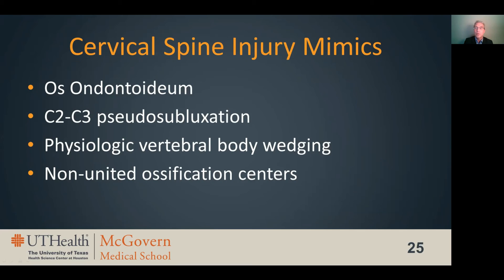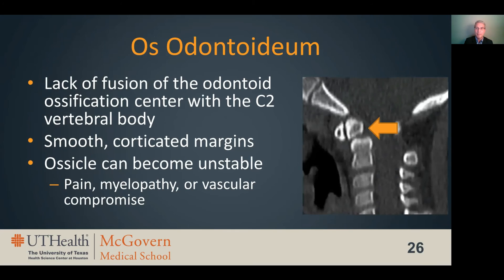Now I'd like to spend a little time going over four relatively common mimics of cervical injury in kids. An os odontoideum is a chronic ununited accessory ossification center at the junction of the dens and the C2 vertebral body. It can be difficult to differentiate an os odontoideum from a type 2 dens fracture on radiographs, but on CT it can usually be recognized as a chronic abnormality based on smooth corticated margins along the ossicle and adjacent C2 vertebral body. Just because the ossicle is chronic doesn't mean it's stable — an os odontoideum can be a source of either acute or chronic pain and neurovascular compromise.